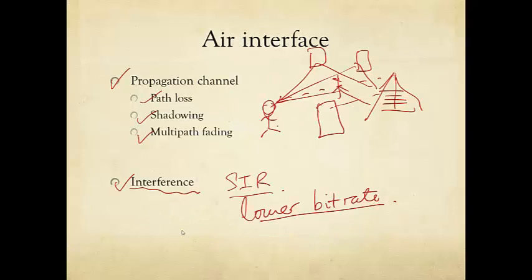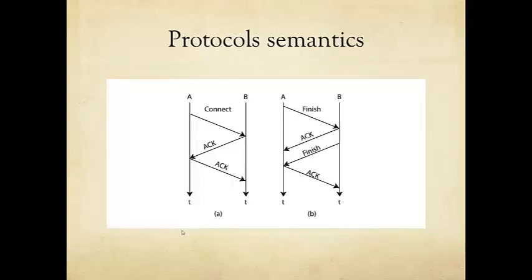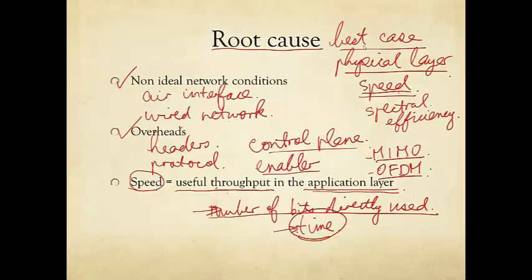In summary, non-ideal network conditions at the air interface and in the backhaul, there are many places where things can go wrong. And then there is also overhead. For example, the overhead associated with protocols. The semantics of protocols actually require a certain sequence of exchange of control signals. The sequence of message passing takes time and therefore adds to the time it takes to finish getting the useful bits, again increasing this number. Sometimes they also take extra number of bits, and that further reduces the throughput.